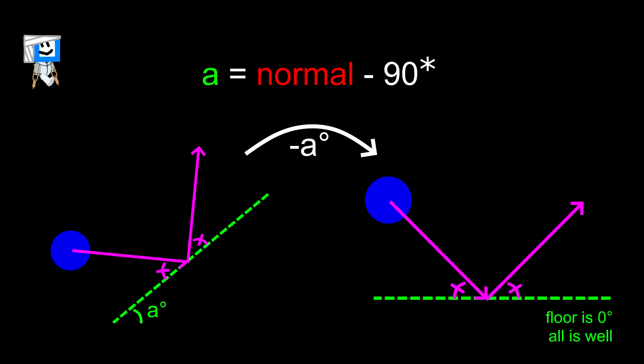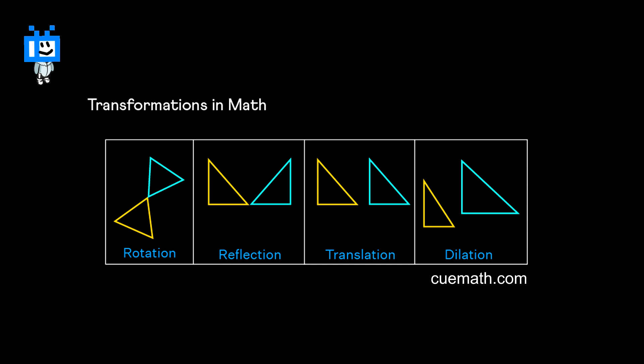By subtracting the normal from all of the angles, we can tell ourselves that the floor is perfectly flat and act like everything is fine. Thanks to the power of normalization, kind of. This may also be called transformation. I'm not totally sure, but I think normalization is an appropriate term for this.